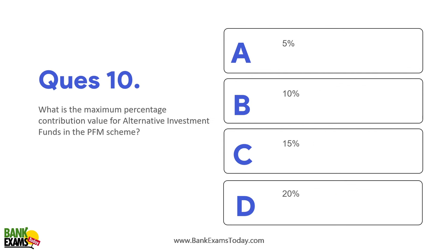What is the maximum percentage of contribution for alternative investment funds in the NPS scheme? In the NPS scheme, 5% is the maximum limit for alternative investment funds. There is no limit on government bonds or corporate debt — it's 100%. For equity, the maximum cap is 75%. So to summarize: equity is 75%, AIF is 5%, and corporate debt and government bonds have no limit at 100%.